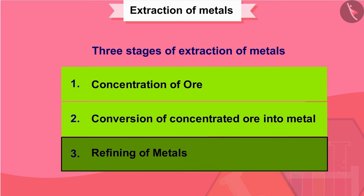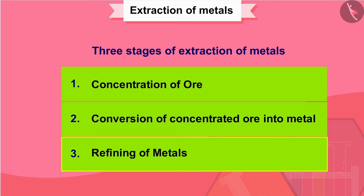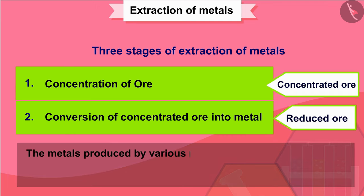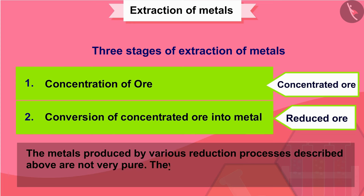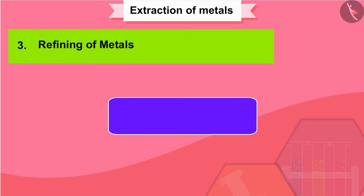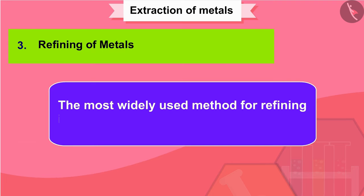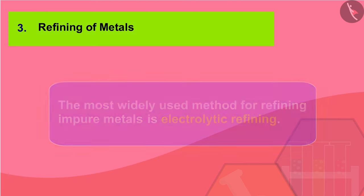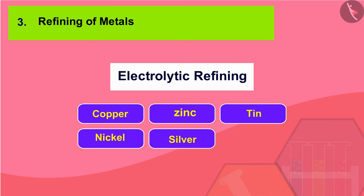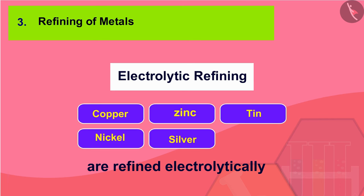The metals produced by various reduction processes described above are not very pure — they contain impurities which must be removed to obtain pure metals. The most widely used method for refining impure metals is electrolytic refining. Many metals like copper, zinc, tin, nickel, and silver are refined electrolytically.